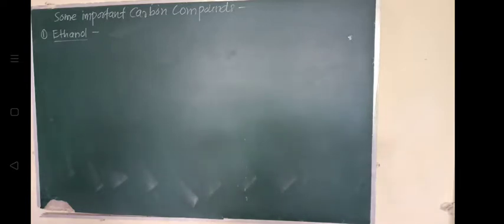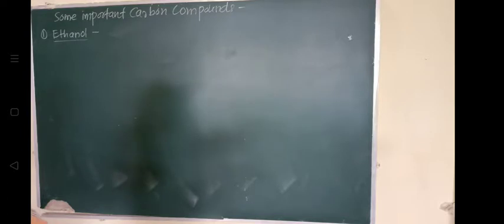We will discuss some important carbon compounds — ethanol and ethanoic acid, which are in our syllabus. We have seen how ethanol is converted in the presence of alkaline catalysts like KMnO4 (potassium permanganate) and potassium dichromate into carboxylic acid. Ethanol is a liquid at room temperature.